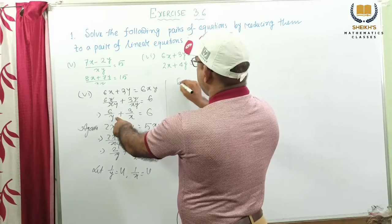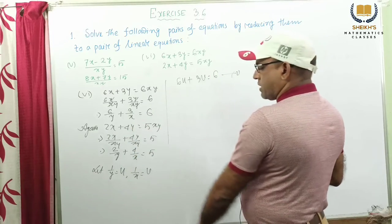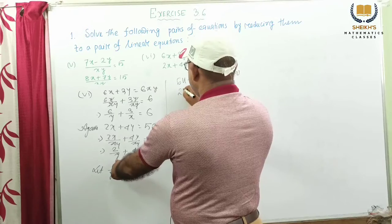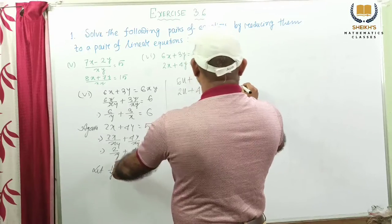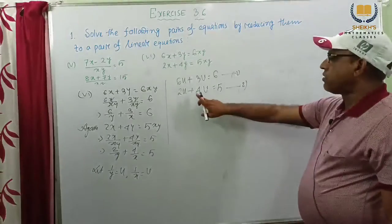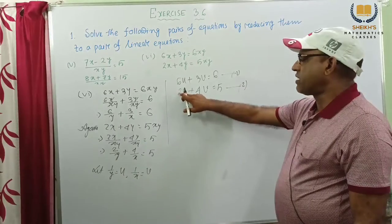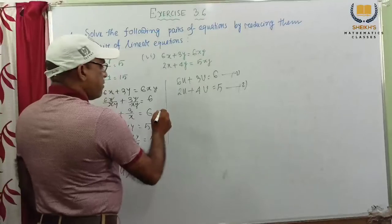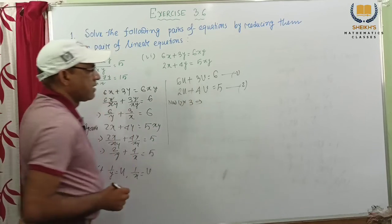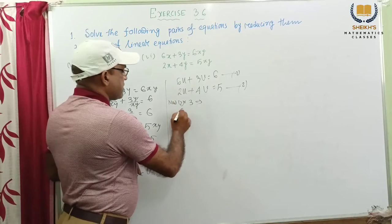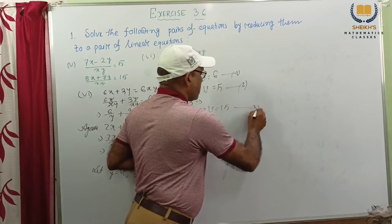We're putting this substitution. So the first equation we get: 6u plus 3v equal to 6. This is number 1 we consider. Next equation: 2u plus 4v equal to 5. We consider this is number 2. Now this is 2 and this is 6. If we multiply this equation by 3, then 3 and 2 gives 6. So equation number 2 multiplying by 3.